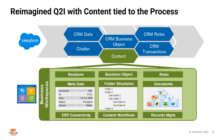These same Extended ECM capabilities — matching the data flow to the process steps — then enabled similar process automations and content availability downstream in the quote-to-installation business process. To close the loop, the service delivery platform was configured to upload site-specific installed products and equipment, which was stored in the ECM content repository, making this accurate information available to the customer service department for future system maintenance or new service calls.